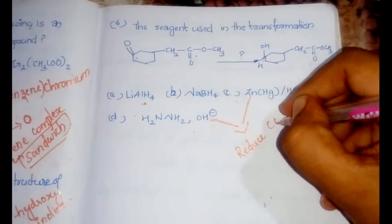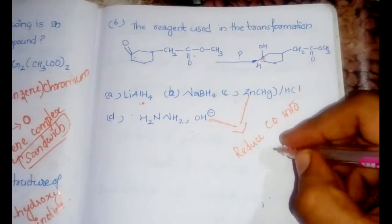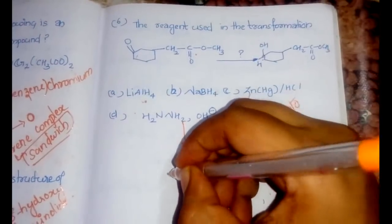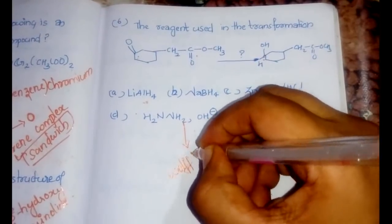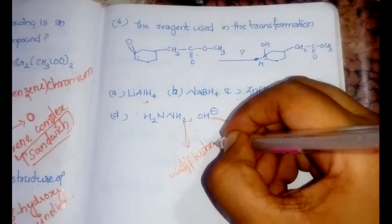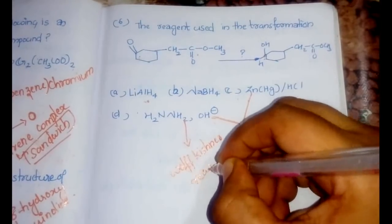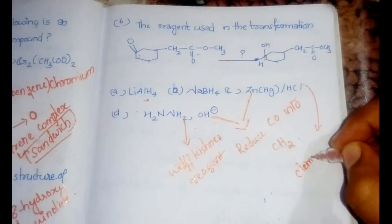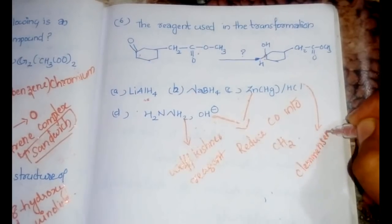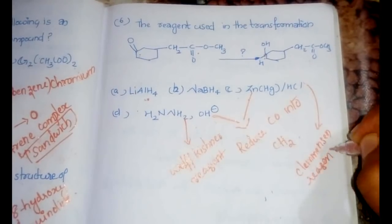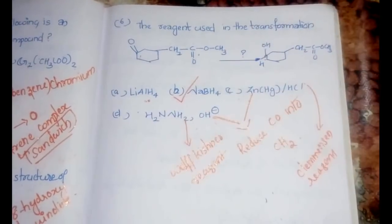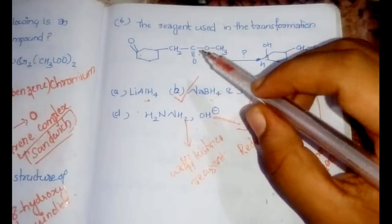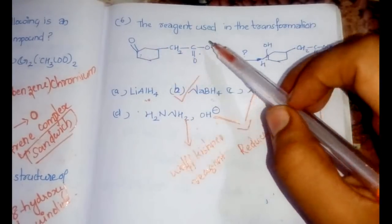The Wolff–Kishner reagent and the Clemmensen reagent both convert the carbonyl group to an alkane (C=O → CH₂), not to an alcohol. So these two are not the answer.